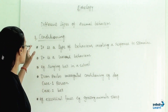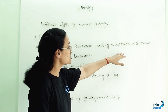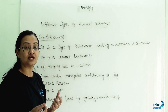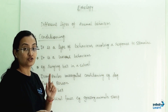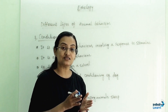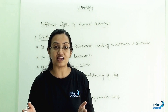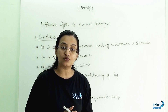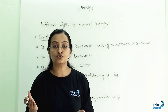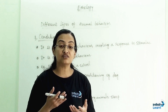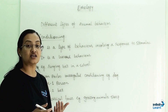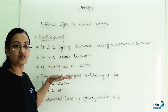Our third animal behavior is conditioning. It is a type of behavior involving a response to stimulus — a learned behavior gained through past experiences. For example, ringing a bell in a school: as the bell rings at different times, students behave accordingly. When the school bell rings at the start, students begin prayer; when it rings at the end, students leave. This learned behavior is based on past experience, which is why it falls under conditioning.